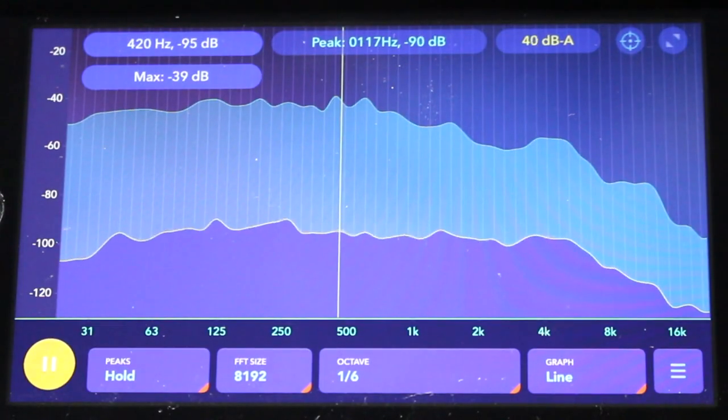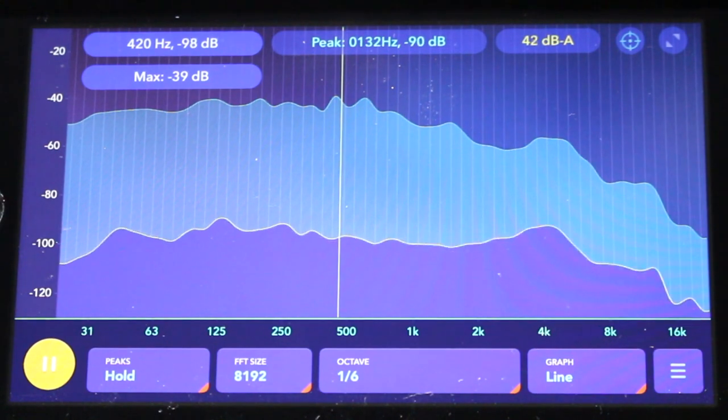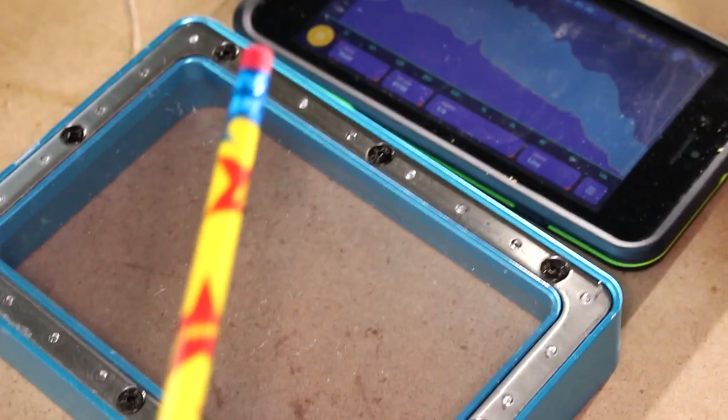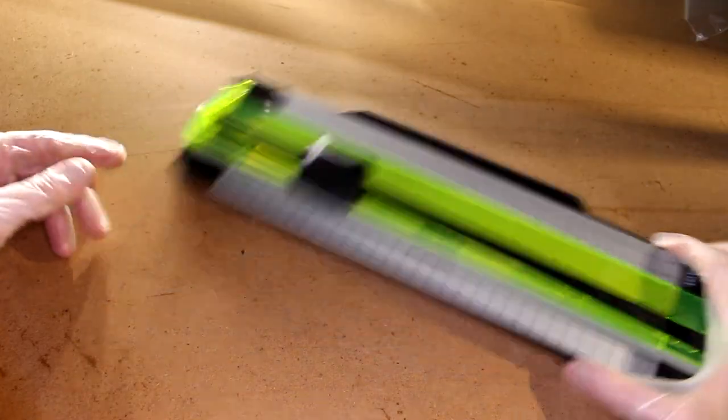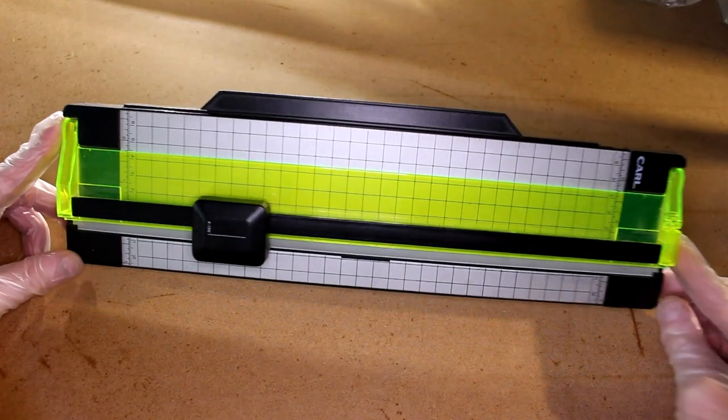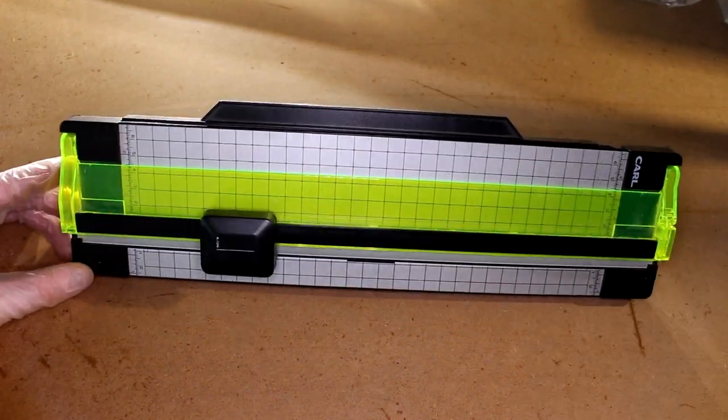Also recommended is a sound frequency analyzer, such as one on your phone, and a tool to perform with. Also, something which is nice to have but isn't absolutely necessary is a cutter like this for slicing the FEP.